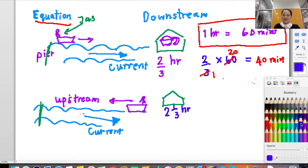You do the same thing. Two and one third: three multiplied with two is six, plus one is seven over three. You multiply with 60 to turn from hours to minutes. Cut them, so it equals 140 minutes.